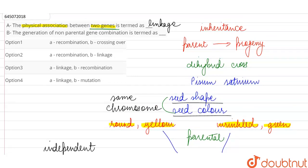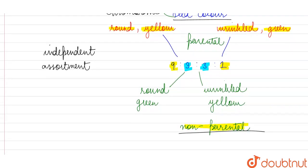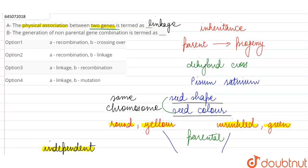So when two genes are located close to each other, when they are on the same chromosome, they have a physical association which reduces the frequency of non-parental gene combinations in the dihybrid cross. Because it violates the law of independent assortment. So this is the phenomenon of linkage.